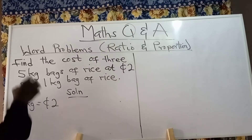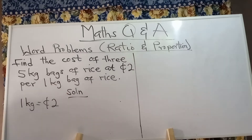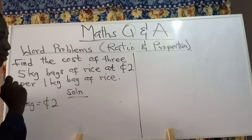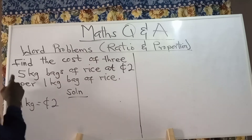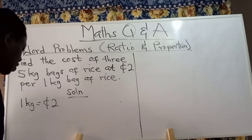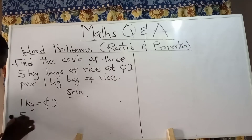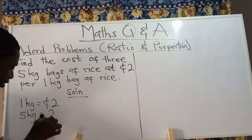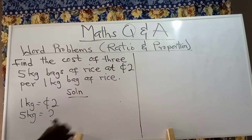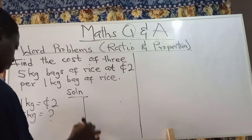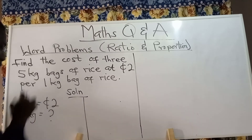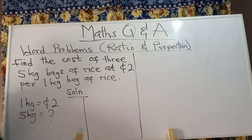You have been asked to find the cost of three five kg bags of rice. So let's first find the cost of five kg, after which we find the cost of three five kg bags. If one kg is two cities, five kg will be what? You divide five kg by one kg and multiply the result by two cities, since it is a direct proportion question.